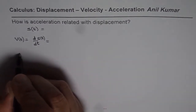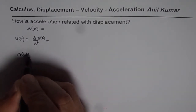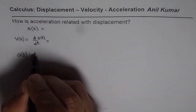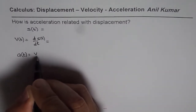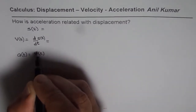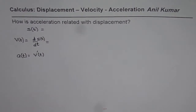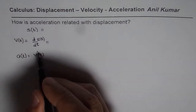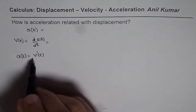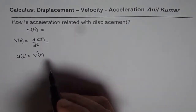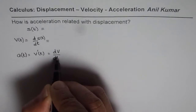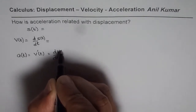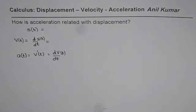As far as acceleration is concerned, acceleration is the rate of change of velocity. So we sometimes write this in prime notation — v prime of t — which is the same as dv/dt, where v is a function of time.